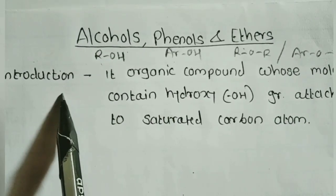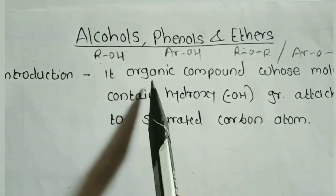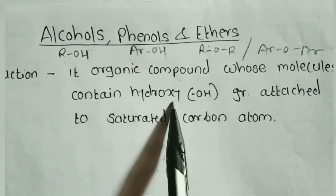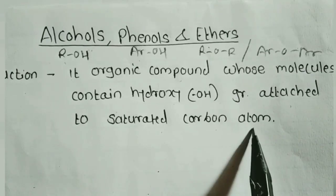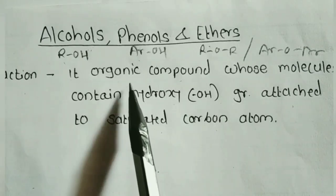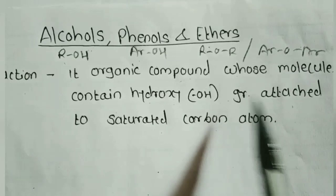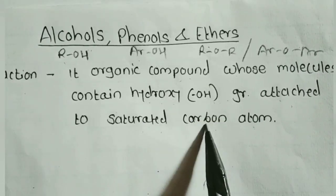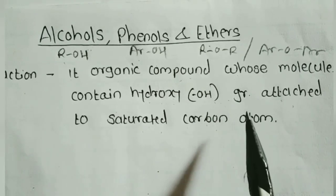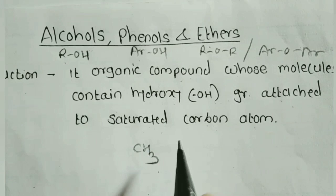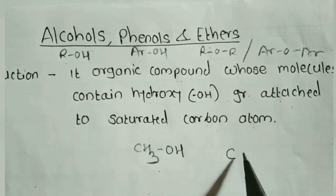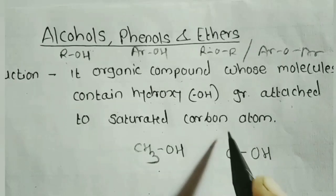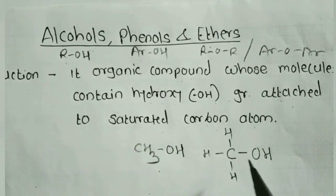Now starting with the introduction. Alcohols are organic compounds whose molecules contain a hydroxy group (OH) attached to a saturated carbon atom. A saturated carbon means this carbon is attached to other groups by single bonds only. For example, CH3OH — in this compound, the hydroxyl group is attached to a saturated carbon atom, which is attached to all other groups by single bonds.